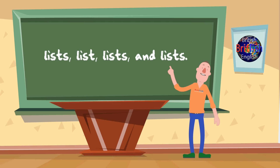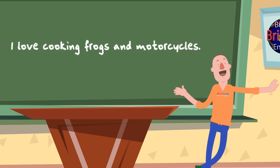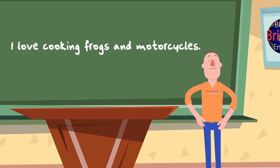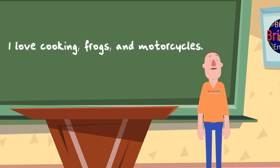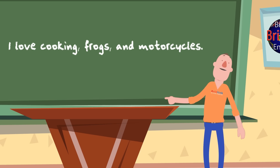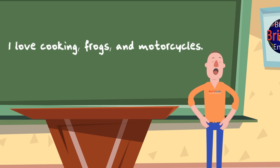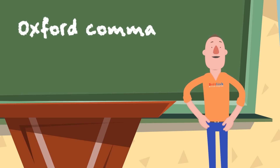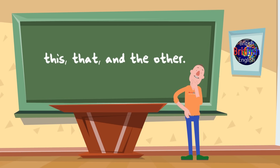Commas are most useful when dealing with lists. 'I love cooking frogs and motorcycles' — what a bizarre thought! 'I love cooking, frogs, and motorcycles' — well, that sounds more normal at least, doesn't it? That last comma after 'frogs' is called the Oxford comma, and it's optional. Use a comma to separate things from each other in a list and thus avoid confusion.